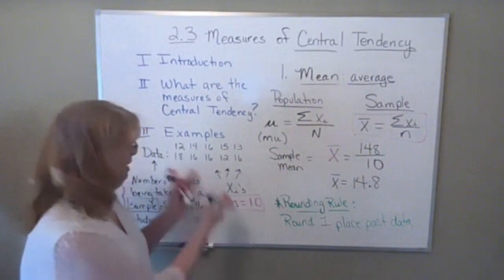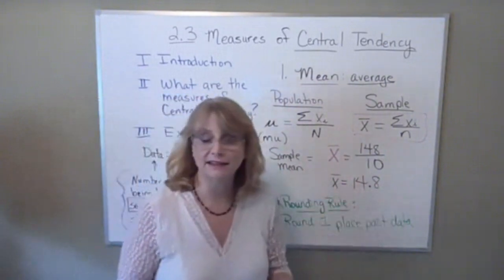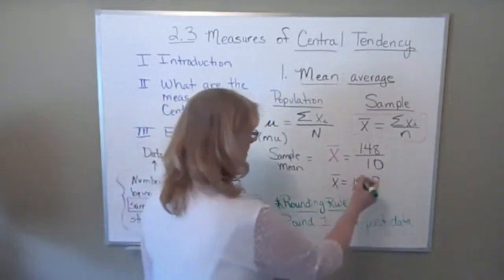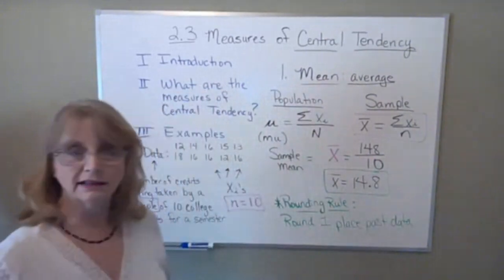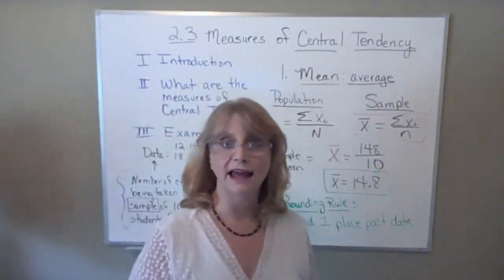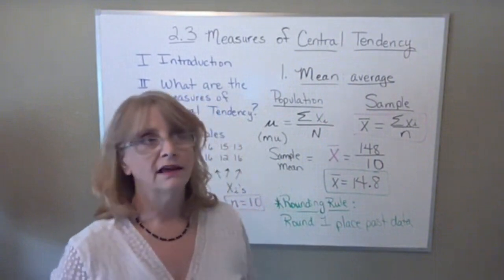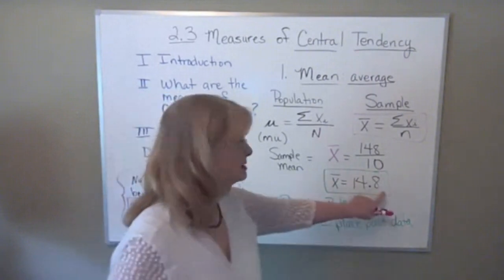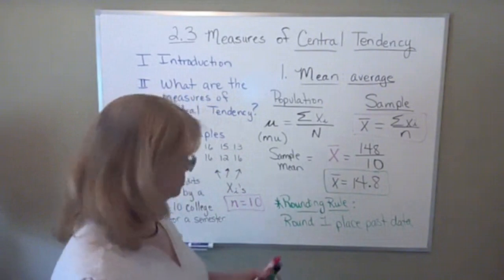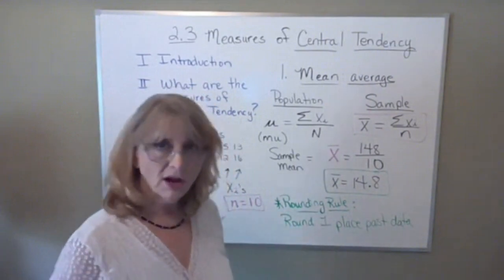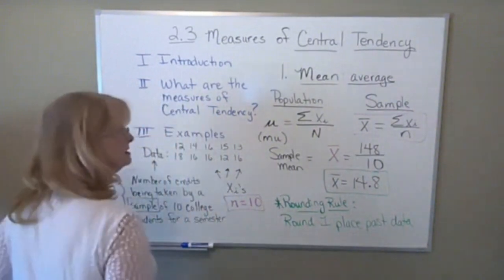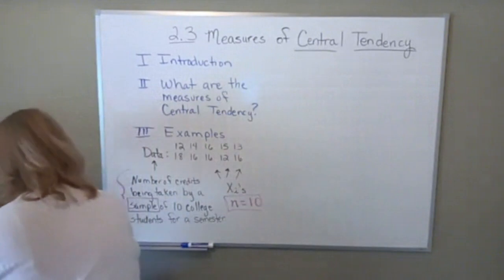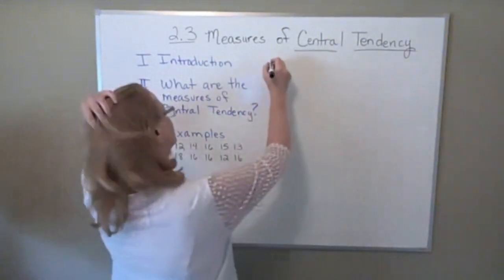Since our data is whole numbers, we round to the tenths place. Our answer of 14.8 is already rounded one place further — the 8 is already in the tenths place — so no rounding is needed here. But if it had come out to 14.82, we would round to 14.8. If it had been 14.85 or bigger, we would round up to 14.9. That's how to find the mean of a sample data set. Now we move to the second measure of central tendency: the median.